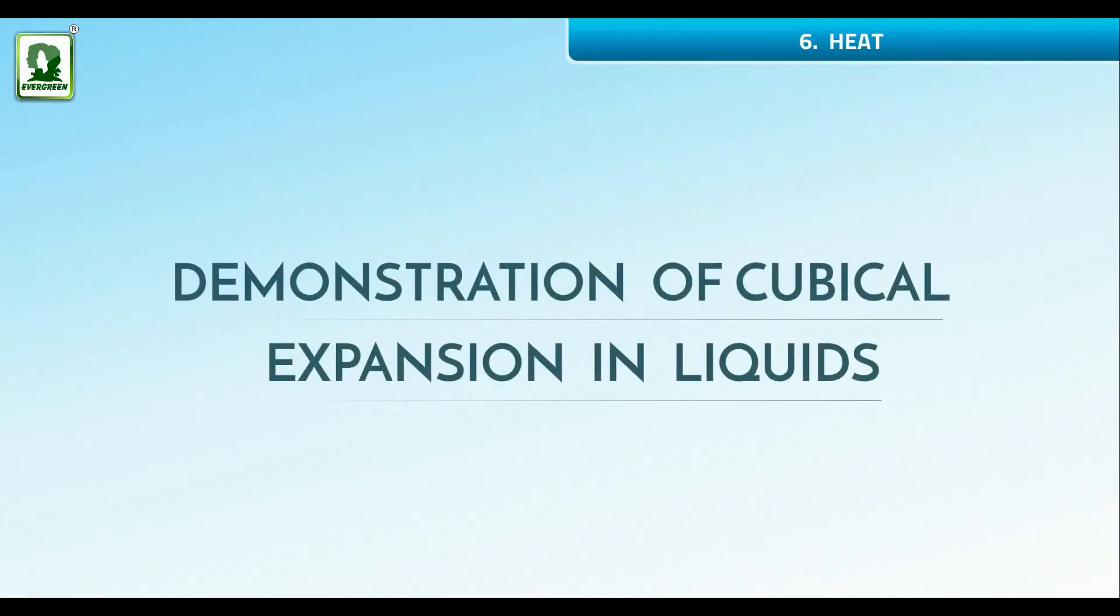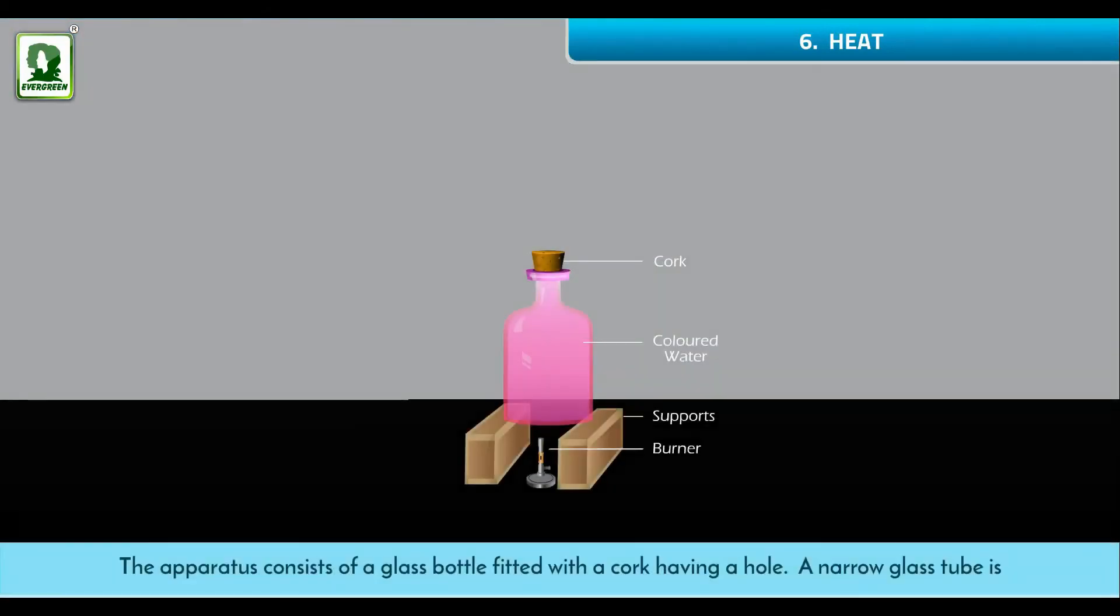Demonstration of cubical expansion in liquids: The apparatus consists of a glass tube fitted with a cork having a hole. A narrow glass tube is passed through the hole such that it fits tightly. Water is filled in the bottle to its neck and is colored with potassium permanganate. On heating, one finds that the water begins to rise in the glass tube, showing that liquids undergo cubical expansion on being heated.